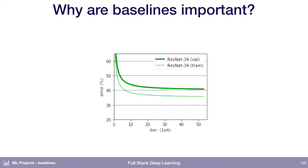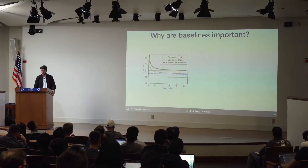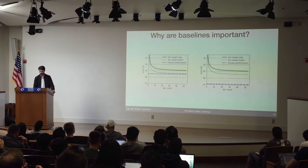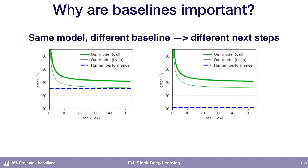So why are baselines so important? Suppose you have some training and validation error curves that look like this, and say that this blue curve is human performance. That will tell you one thing about what you need to do to your model. But if human performance were actually closer to 20%, then that tells you something very different about how your model is performing. You can have the exact same model but a different baseline, and that will imply different next steps about what you want to do in order to improve your model.